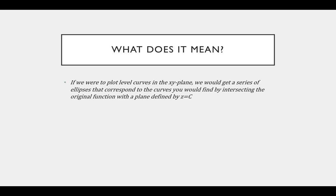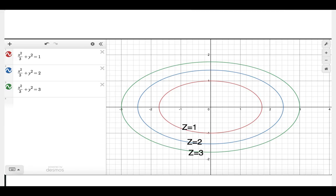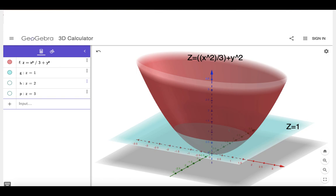Now we want to ask: what does that actually mean? What does it correspond to? What's actually being done here is considering the intersection between the paraboloid and various planes defined by z equal to some constant. If I have the paraboloid z = x²/3 + y² and I plot a plane such as z = 1 or z = 2, the intersection between that plane and the paraboloid itself is the same ellipse shown in this figure.